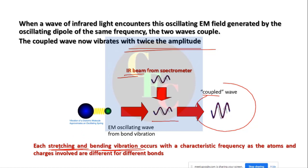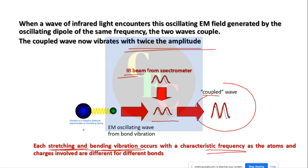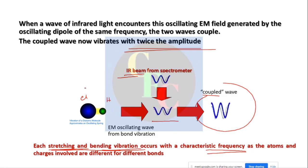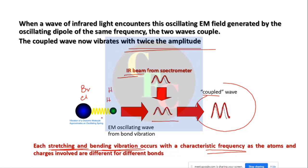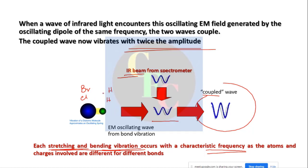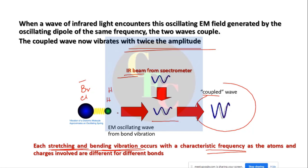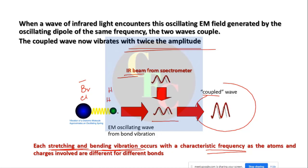Stretching and vibration occurs at a characteristic frequency for different bonds. For example, HCl will occur at a different frequency than HBr because they are different kinds of molecules with different atomic weights. This characteristic vibration frequency for a particular bond is what helps us in characterizing molecules.